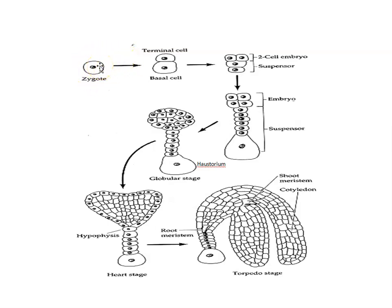The first stage is zygote formation — the fusion of male and female gametes. Then the two-cell stage, where the embryo possesses a terminal cell and a basal cell. The two-cell embryo and suspensor progress to the eight-cell stage. Then the globular stage, where the embryo progresses to a globular form with suspensor and haustorium visible. This is followed by the heart-shaped stage.